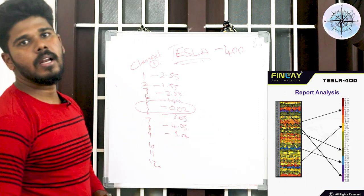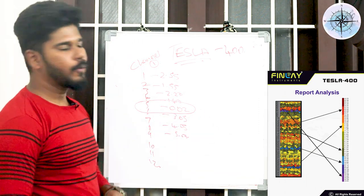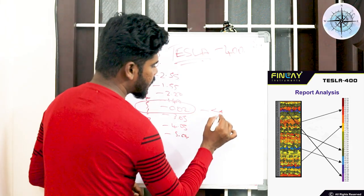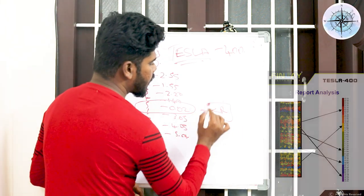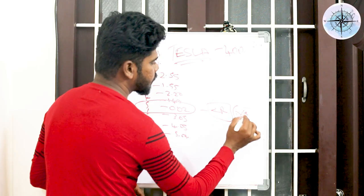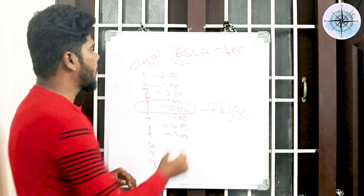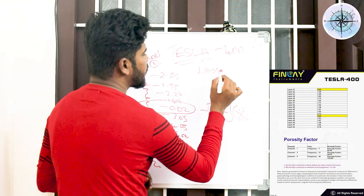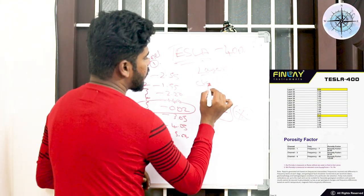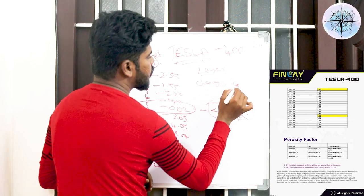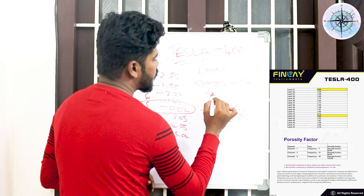You shouldn't be saying that, it is wrong. Because Tesla works under layer mapping profile. Layer mapping means changes in the formation of soil.